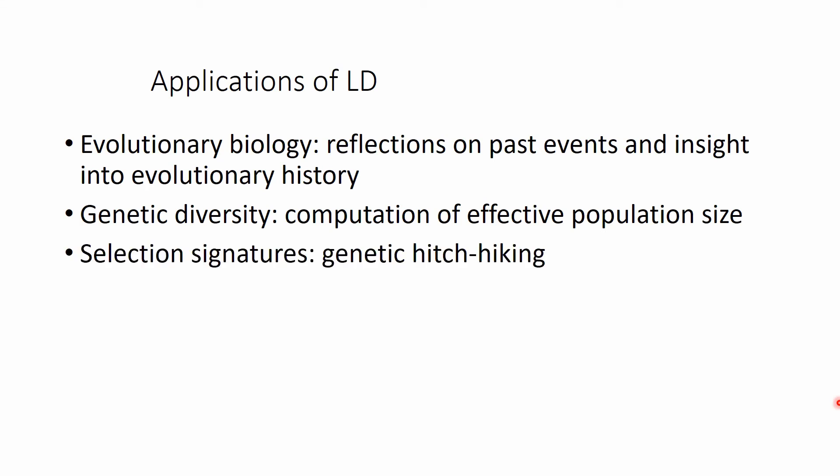We can also tell something about artificial or natural selection events on the genome — the so-called selection signatures and genetic hitchhiking. These are events where the actual selected gene drags along part of the surrounding genome, appearing in a population as a selection signature whose size is determined by LD.